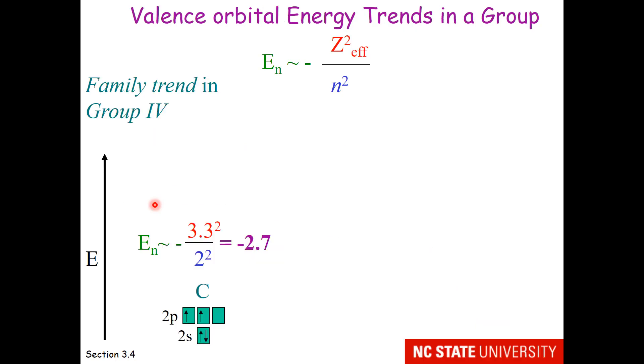What happens to valence orbital energy trends if we go down a group? Well, we'll start with carbon, which is in group 4, and period 2. So its relative orbital energy is roughly proportional to minus 3.3 squared over 2 squared, or minus 2.7.